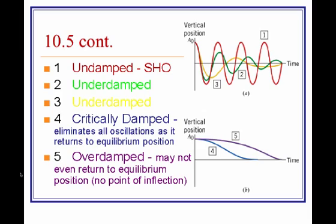Next, we have under-damped, or just damped, harmonic motion. In this case, energy is removed from the system over time. This would be the green and the yellow lines. Notice how they still continue to oscillate, but the amplitude is getting less and less, or decreasing, over time.